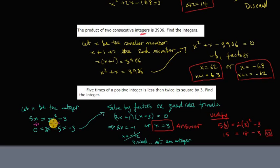Twice its square is 2 times x squared minus 3. So this is the equation you needed to get. 5x is equal to 2x squared minus 3. Let's read it again. 5 times a positive integer is less than twice its square by 3. Twice its square by 3. So that's the equation there. And then I solved it.